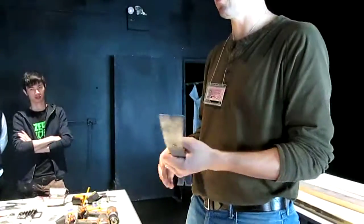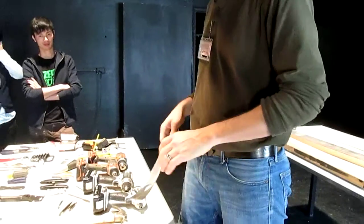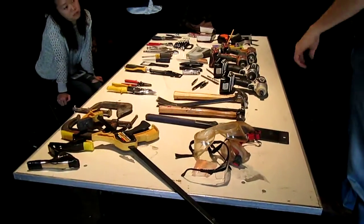This is called a pry bar. This is for the same kind of thing that the claw hammer is for in the end. Prying stuff, pulling nails, things like that. So we've got those covered.